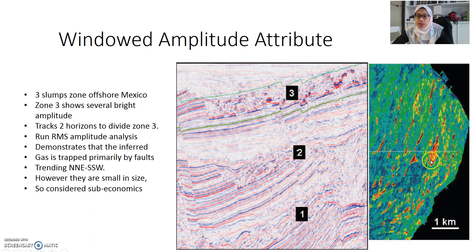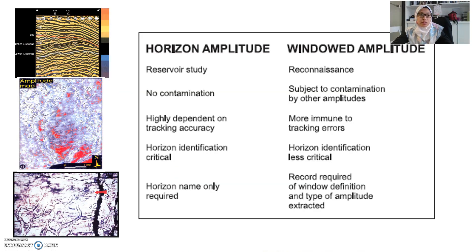But they are not economical because they are very small in size. This is one kilometer. So this is maybe just like 200 meters in width. It's not economical and you can actually see that zone 3 here showing that it is not suitable for production based on your amplitude extraction.